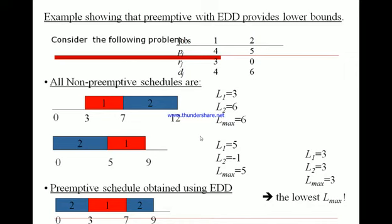This example shows preemptive and non-preemptive scheduling using earliest due date to find minimum lateness. We have Job 1 with processing time 4, release time 3, and due date 4. Job 2 has processing time 5, release time 0, and due date 6.